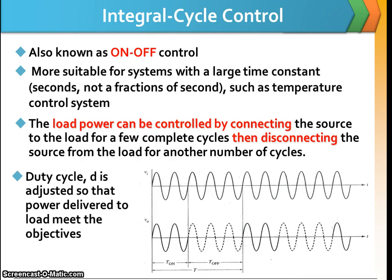So the load power can be controlled by connecting the source to the load for a few complete cycles, then disconnecting the source from the load for another number of cycles.